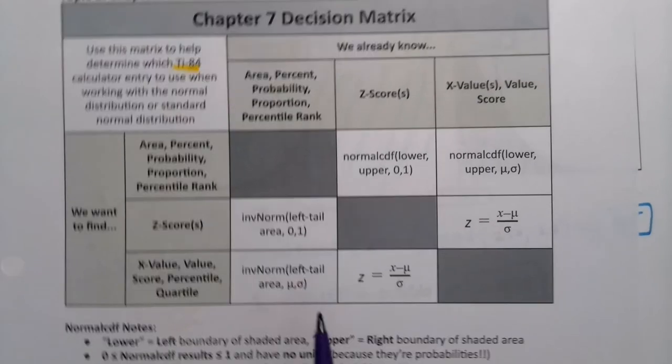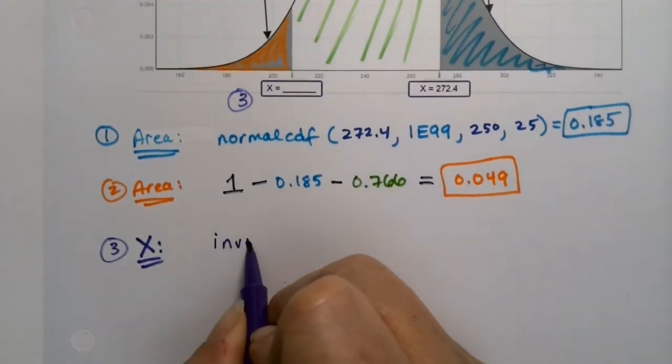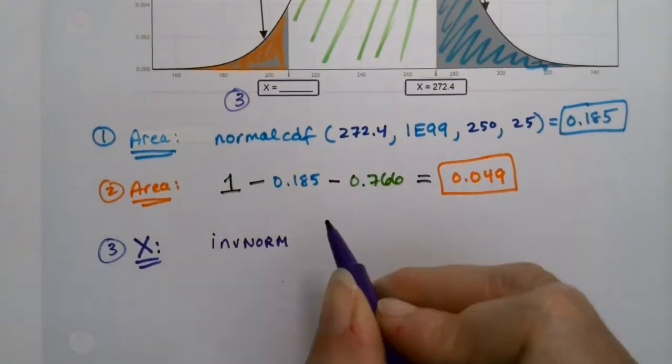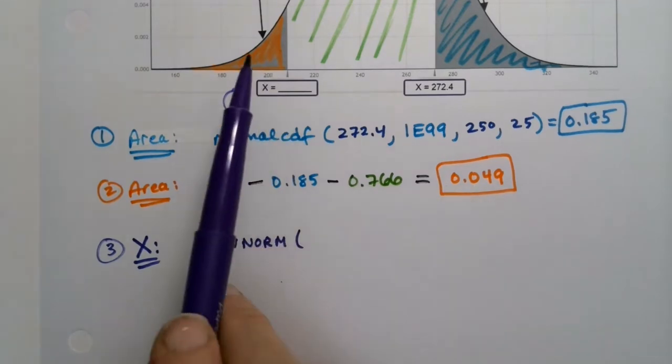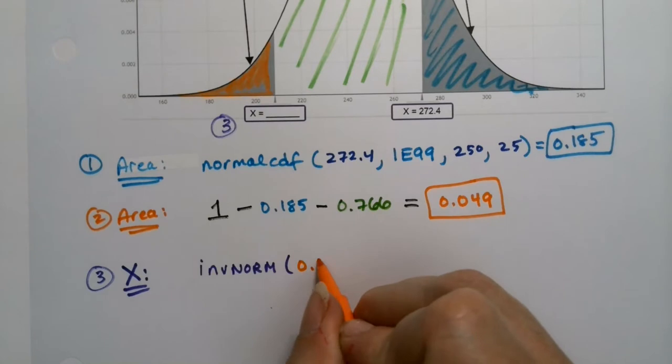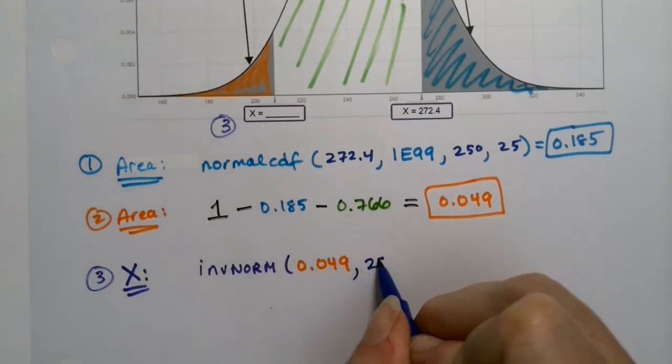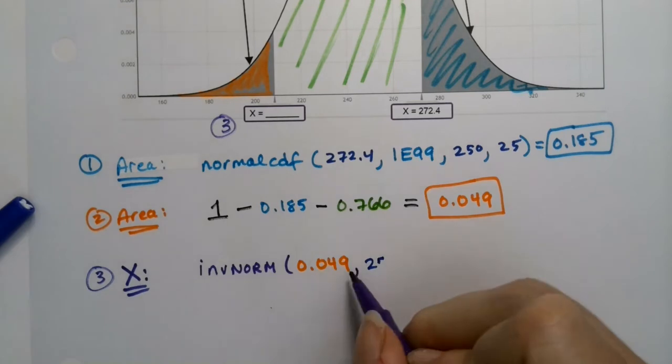Of course, the left tail area is a little bit flexible, but we can make it work. All right, so inverse norm, actually, left tail area will work perfectly here, because I have that left tail area. It's this orange piece right here, which is 0.049, and then the mean was 250. Oops, wrong color. Mean was 250, and the standard deviation was 25.